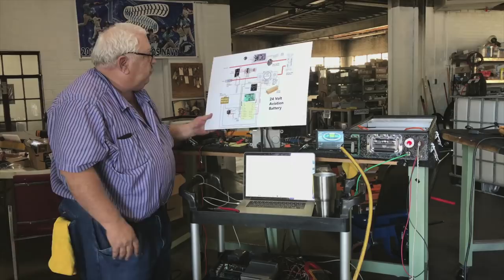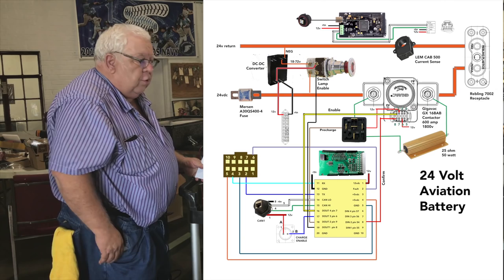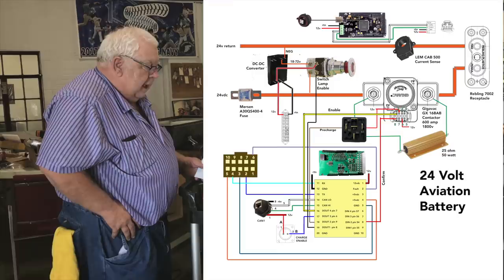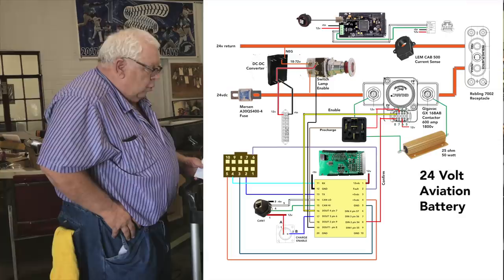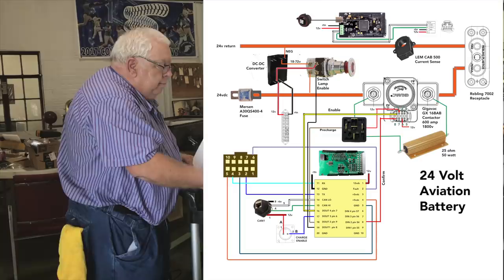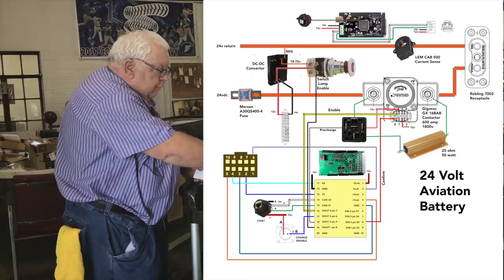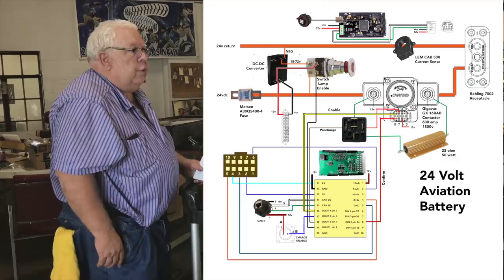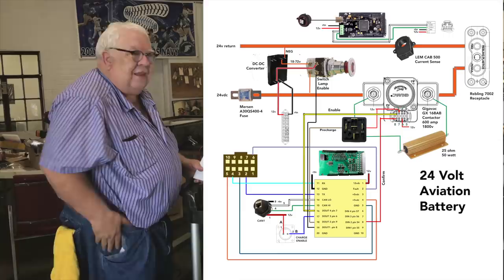Let's take a look at the diagram. We have added a 25-ohm, 50-watt pre-charge resistor across the terminals of our Gigavac GX16 BAB contactor. We use that contactor, it's rated for 600 amps. It can do about 1,500 briefly and 1,800 volts. And we're just going to do that on the positive terminal. The relay we're using is a Keiko Kilovac high-voltage 12-ohm coil relay. It's a little bit of overkill for this application, but overkill is always appropriate.